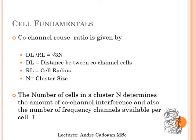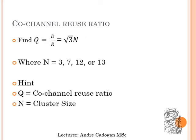The co-channel reuse ratio is the distance between co-channel cells divided by the cellular radius, equal to the square root of 3N. This is something you will need to know for exams. For example, if you want to find Q — the co-channel reuse ratio — the cluster size N can be between 3, 7, 12, and 13. The difference between N=13 in urban areas versus N=3 in rural areas means D over R equals the square root of 3N.